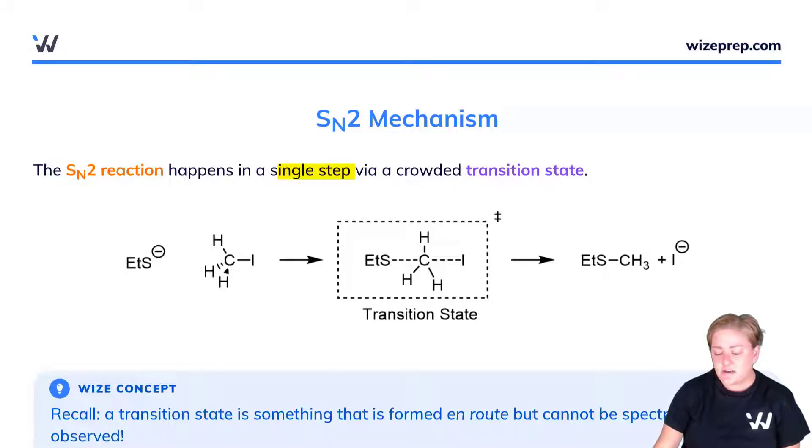Now we're going to go through the same activity. First thing we're going to do is identify that leaving group. Here it is—it's the iodine. I have a bond dipole here between the carbon and the iodine, making the carbon electrophilic.